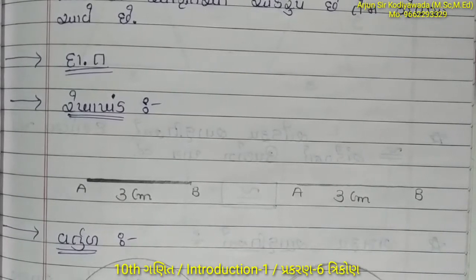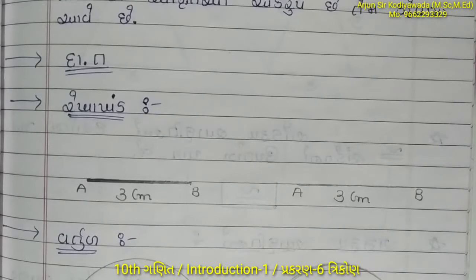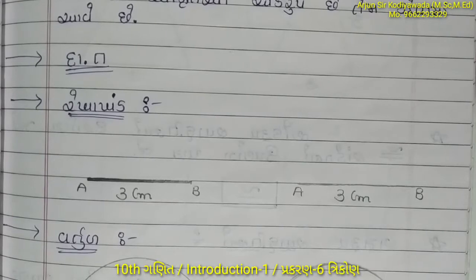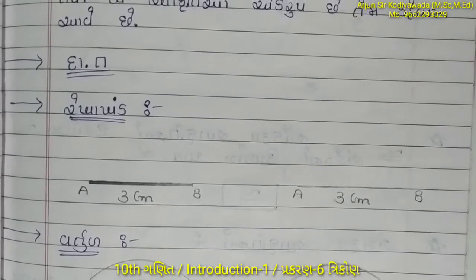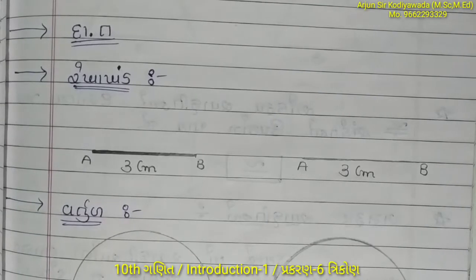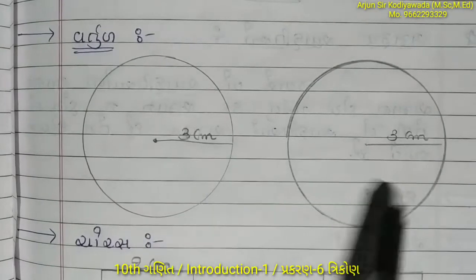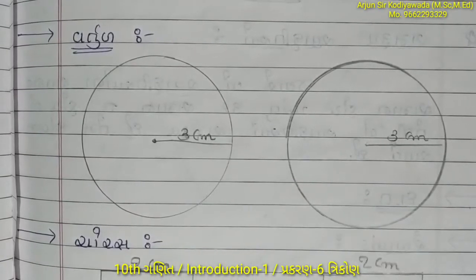જ્યારે બે આકૃતિઓ ના આકાર ની વાત કરીએ, આ બે આકૃતિઓ છે જે રેખા ખંડ ની - 2 આકૃતિઓ ના આકાર કેવા છે? સરખા છે. આ રેખા ખંડ ની સરખી છે. એ સિવાય વાત કરીએ વર્તુળ ની - 3 સેન્ટિમીટર ત્રિજ્યા ના - તો આ આકૃતિ કેવી છે? સમાન છે.